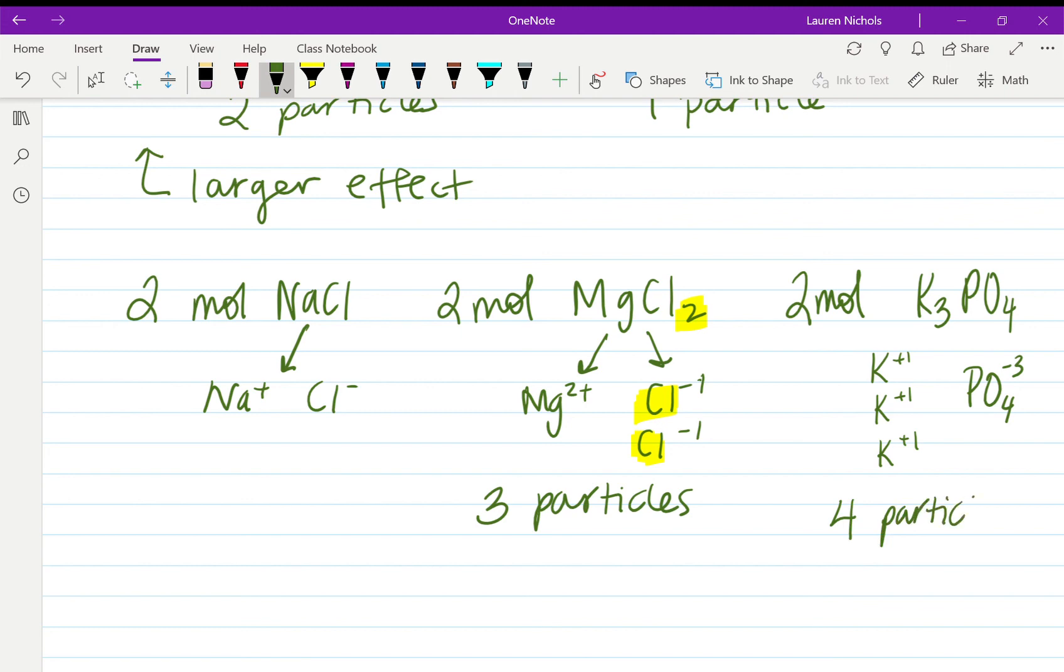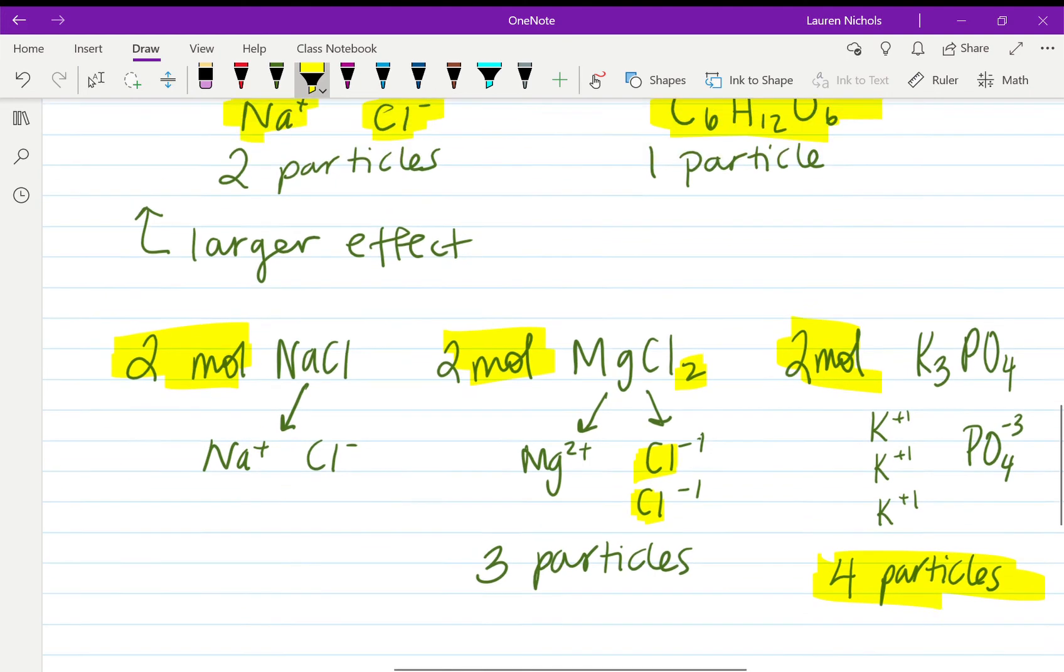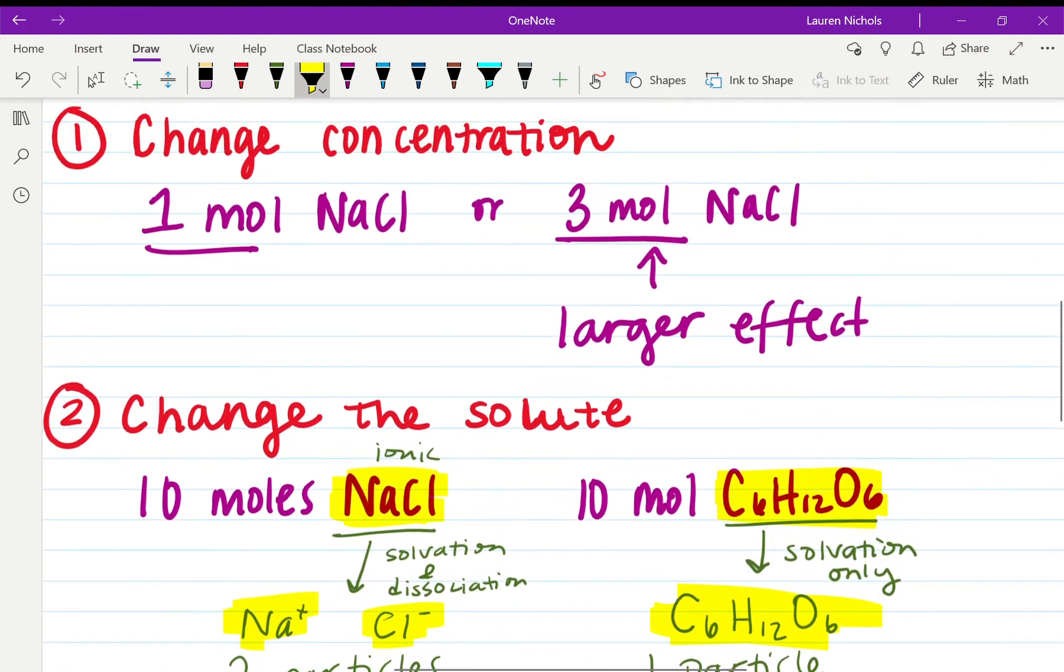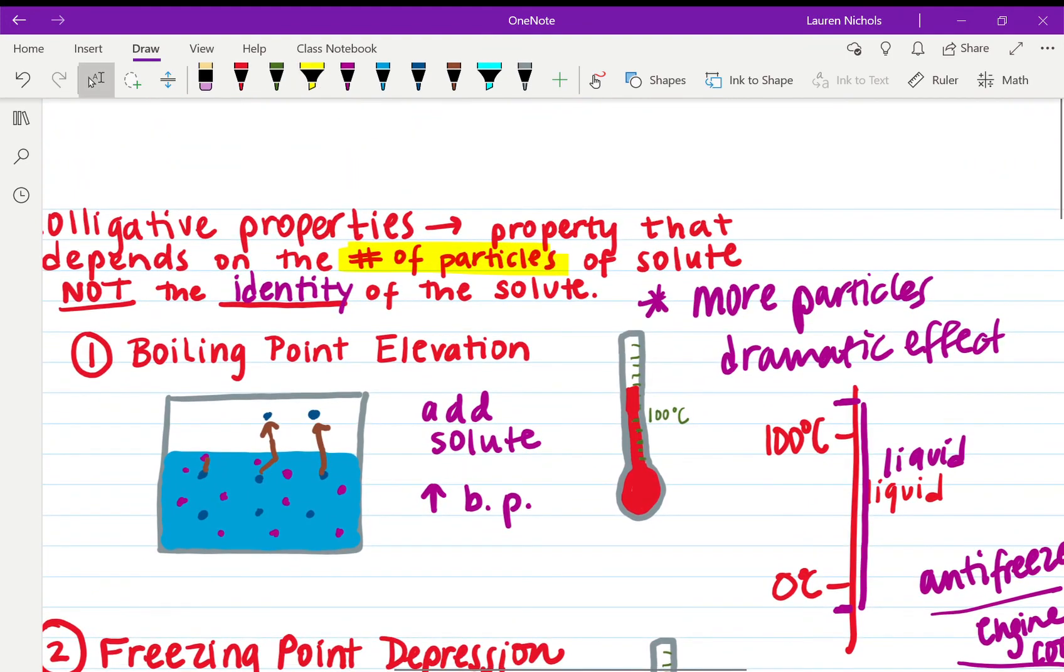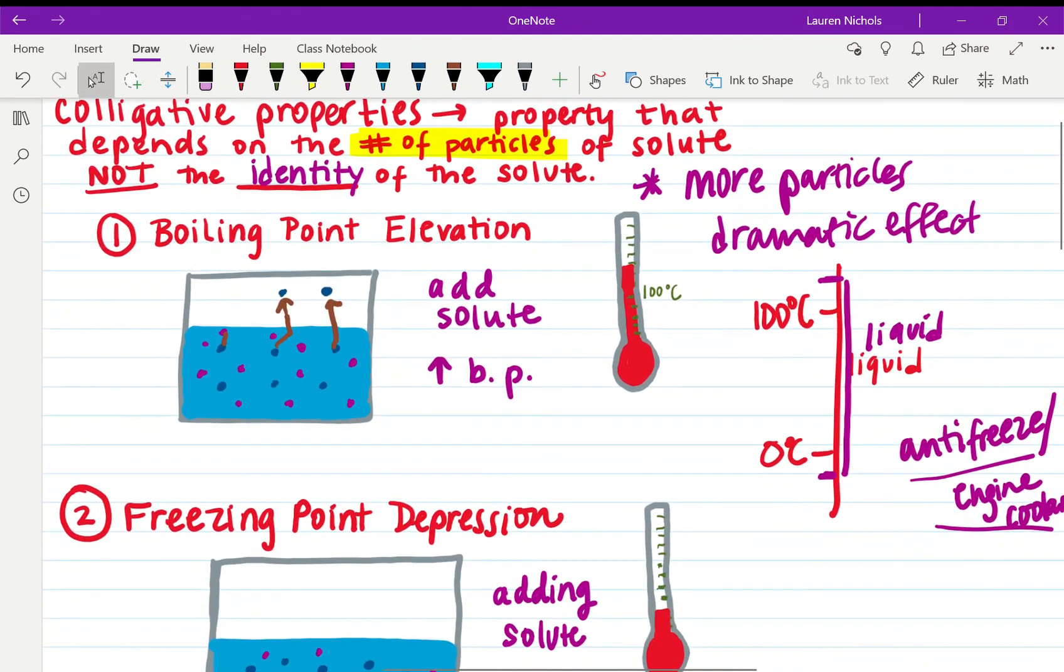And this one, potassium phosphate, we know that it will produce three potassium ions that have a +1 charge and one phosphate ion with a -3 charge, so that's a total of four particles. Which means even though their concentration is the same number of moles, because potassium phosphate has four particles compared to three or compared to two, that means it will have the larger effect on our boiling point.